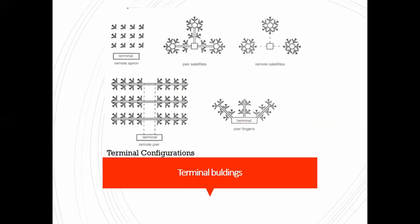The other thing to cover quickly is terminal buildings. Terminals can be laid out in different ways. You get the remote apron configuration, where the terminal is separate from the apron where planes stand. You get pier satellites, where planes stand around a circular satellite connected by piers. You get remote satellites with no piers connecting to them. Then remote piers, where the terminal doesn't connect to the piers. And pier fingers, which spread out directly from the terminal.